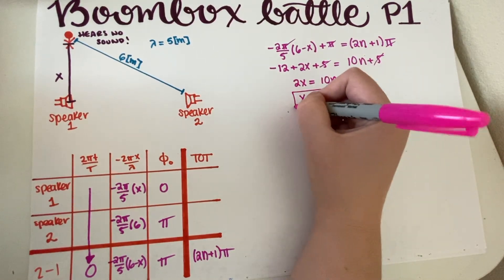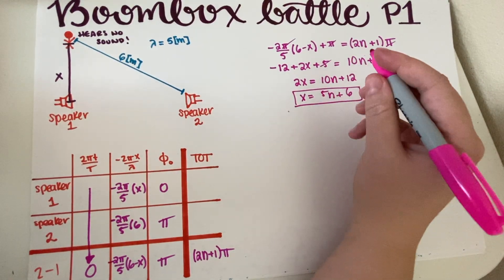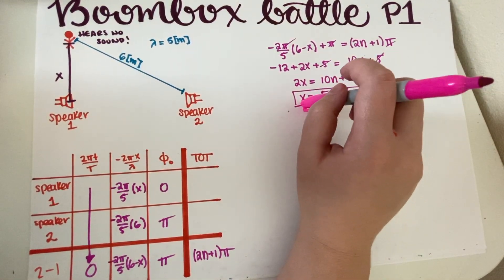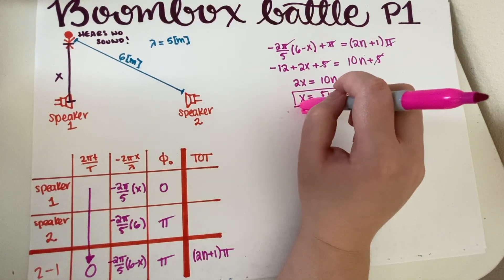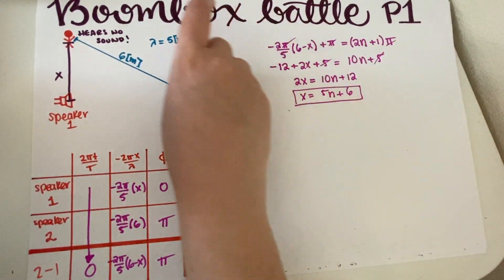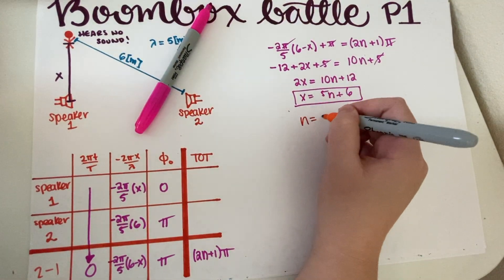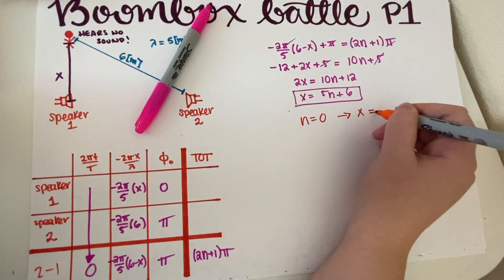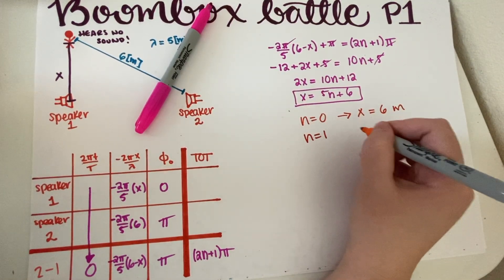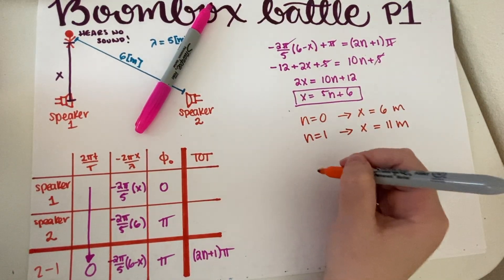We now have X = 5n + 6, and we need the minimum distance. All of these values of X work in the sense that the person would hear no sound, but we want the smallest positive one. For n = 0, X = 6 meters. For n = 1, X = 11 meters. As n increases, the distance only gets larger, so that direction doesn't work.